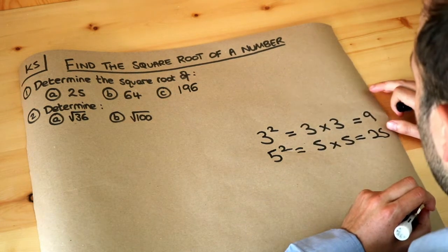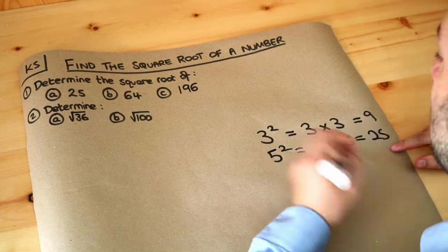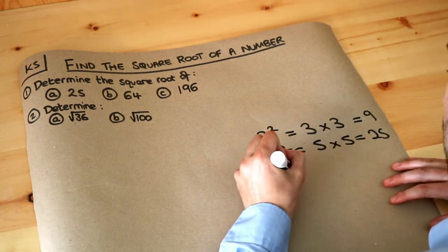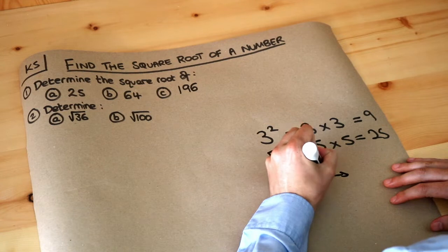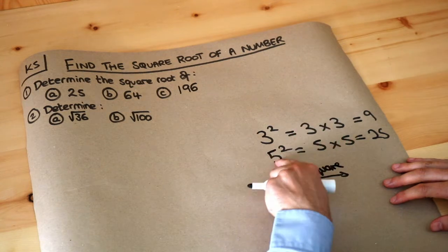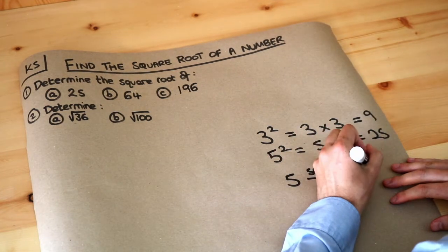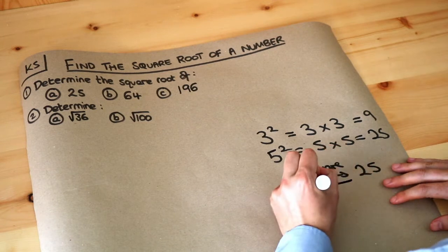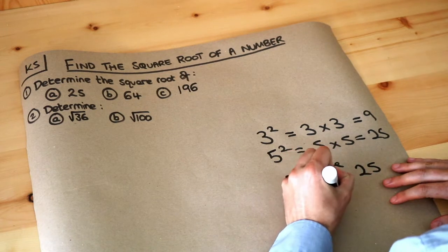Now the square root of a number is the opposite of squaring. So if we take 5 and we square it, 5 squared we said was 25,